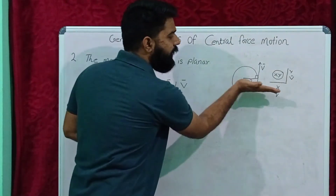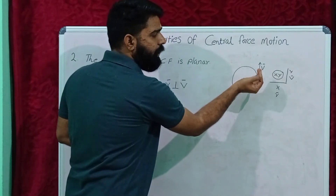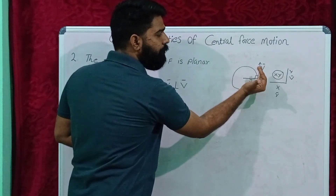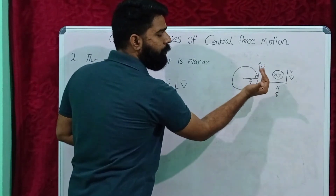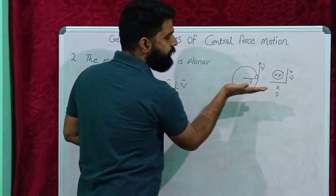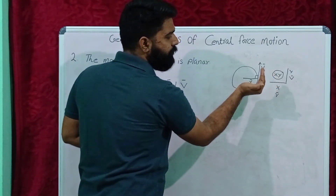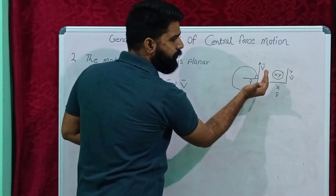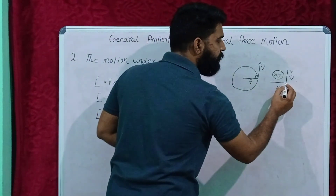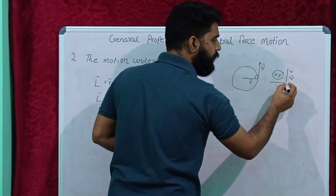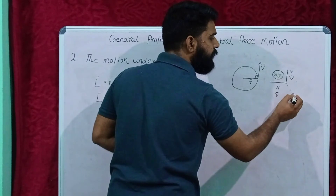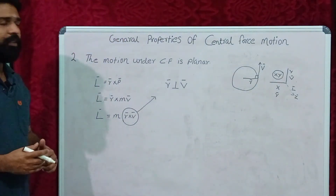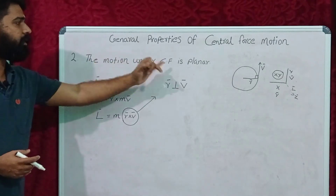This is the direction of the position vector. The direction of the four fingers represents the direction of velocity, and the direction of the thumb represents the direction of angular momentum. When we fold the four fingers, the thumb represents the direction of angular momentum. If we consider this is the z-axis, then the angular momentum is in the z-direction. So here we proved the motion under central force is planar.